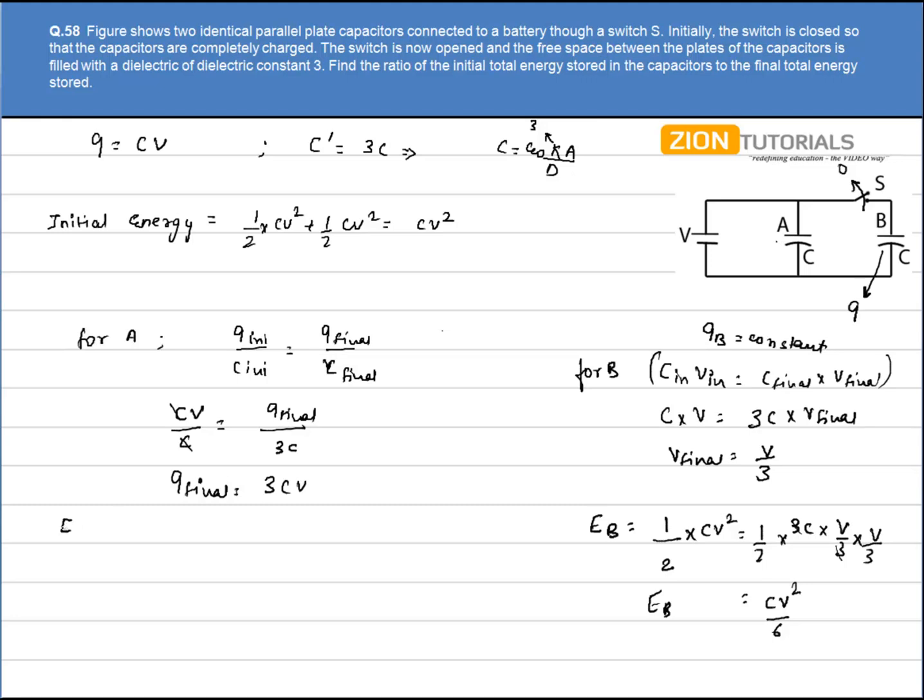So energy for A can be calculated by half of Q squared by C. That is half of 9C squared V squared divided by C. So it comes out to be 9 by 2 CV squared.